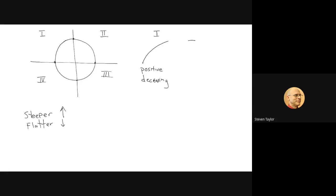Region two — if I look at two different slopes here, at the beginning and towards the end, it's getting steeper. Since it's going downhill, I'm going to call this a negative slope, and it is increasing because it's getting steeper from left to right. So that would be negative increasing.